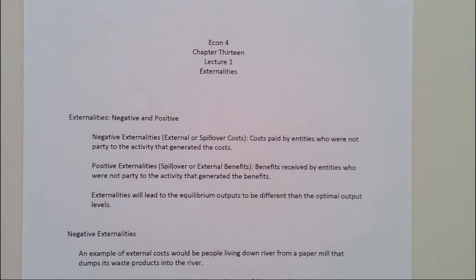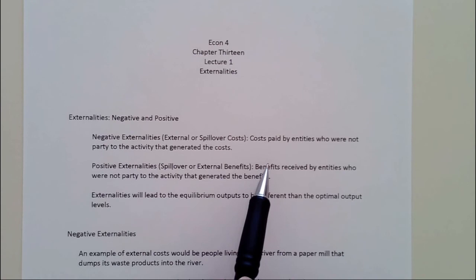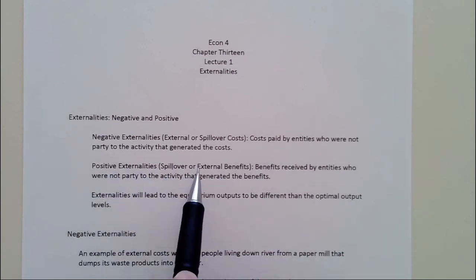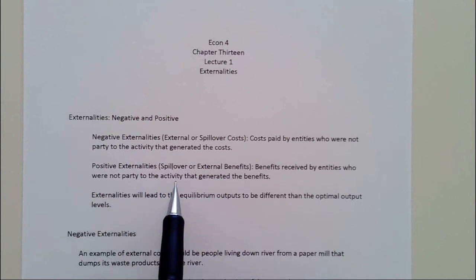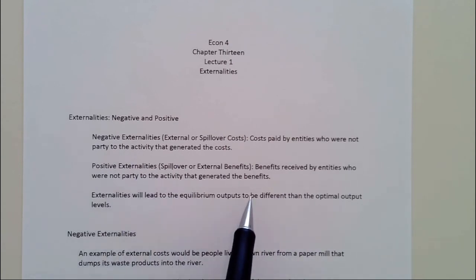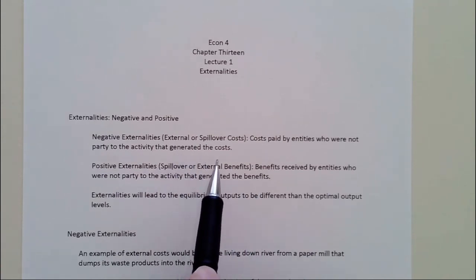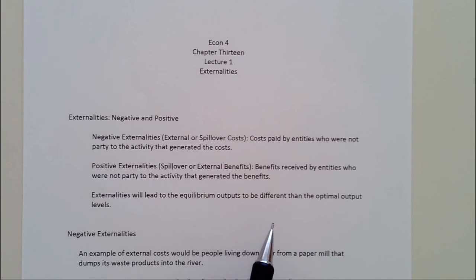The term externalities can be either negative or positive. Negative externalities, also known as external or spillover costs, are costs incurred by entities who are not party to the activity that generated the cost — so these are third-party effects. Positive externalities are also known as spillover or external benefits — benefits received by entities who are not party to the activity that generated them. Externalities will lead to the equilibrium output being different than the optimal output, and that's the problem — we get equilibrium which is now not optimal anymore.